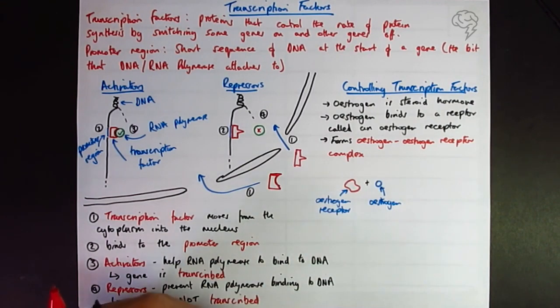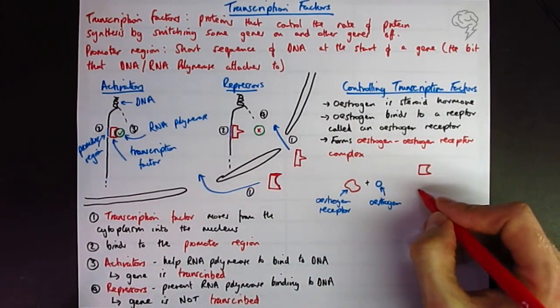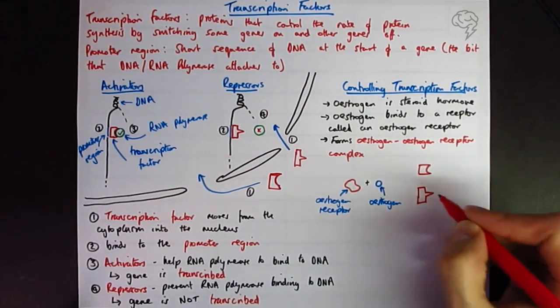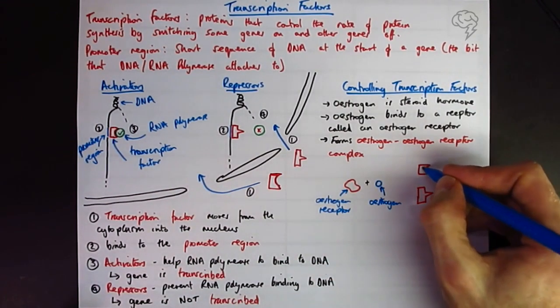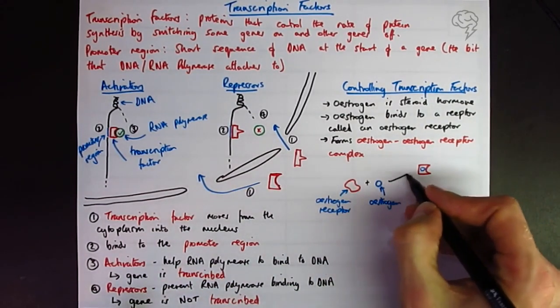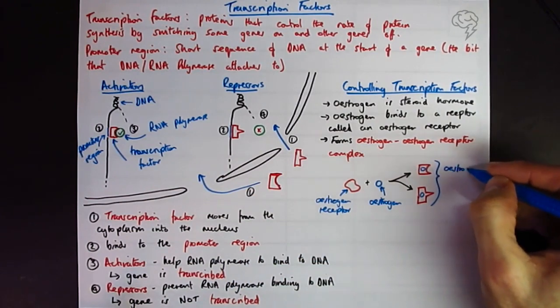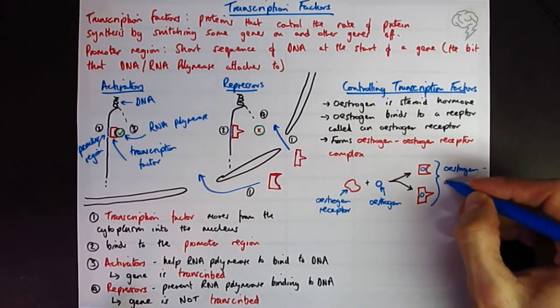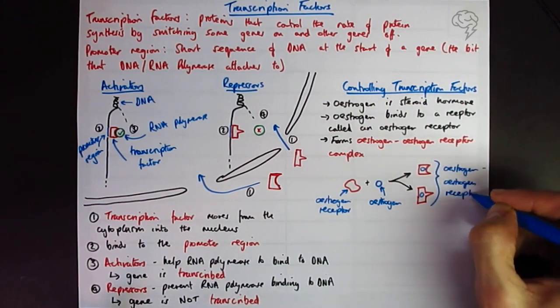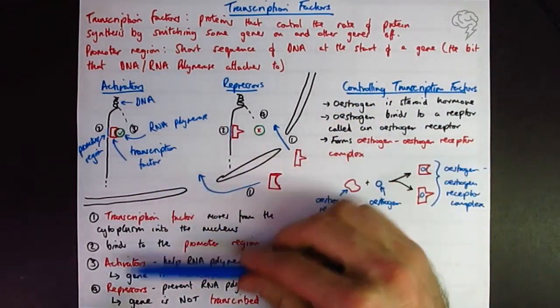And when these combine together, when the estrogen joins the estrogen receptor, it's going to change the shape of this and make it functional. So this is now going to become a transcription factor and it can actually become either an activator or a repressor, depending on the cell, depending on the gene, depending on a few things. But they're not going to ask you any of that. So it could become this, could become this. And this we'd call the estrogen receptor complex, which is a transcription factor. And then this would then move into the nucleus and behave as a transcription factor like these would.